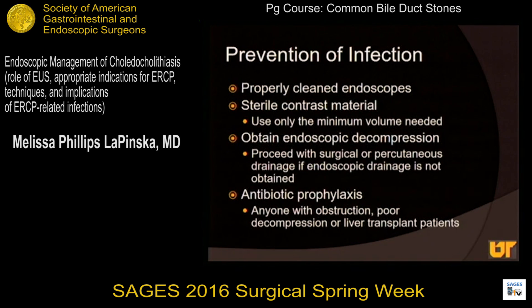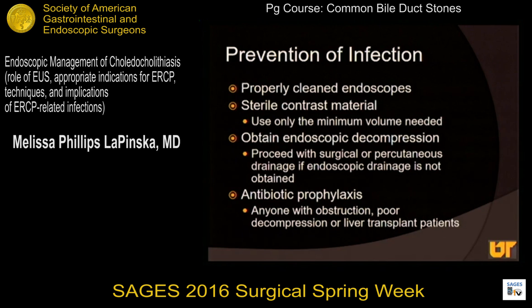In terms of prevention of infection: properly cleaned endoscopes play into this, as does the use of sterile contrast material with the minimal amount necessary because of that osmotic factor. Most importantly, obtaining endoscopic decompression is critical. If you're not able to do this endoscopically, you have to come up with another alternative — whether that's surgical decompression or percutaneous drainage from interventional radiology colleagues as a temporizing measure. Antibiotic prophylaxis, as compared to treatment for patients with cholangitis, is important for anyone with biliary obstruction, anyone with poor decompression awaiting a subsequent procedure, or patients with liver transplants because of their immunocompromised status.